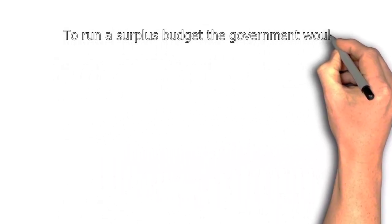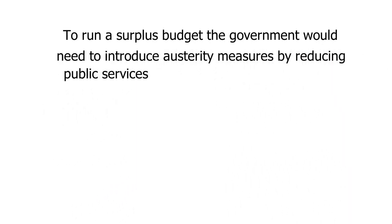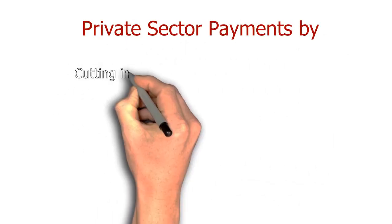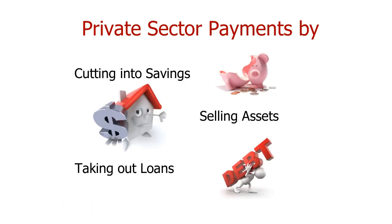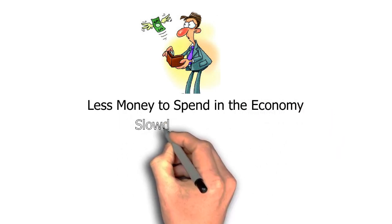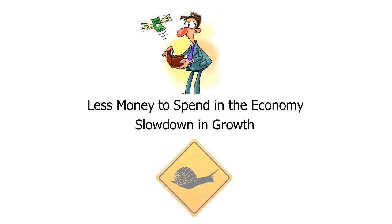So, to run a government surplus, they'd need to introduce austerity measures by reducing public services or taxing the private sector more. To pay for this, the private sector would need to cut into private savings, sell assets or take out loans on credit, thus increasing private sector debt which is already running at extremely high levels in relation to GDP. However, in taking money out of the private sector to reduce government debt, there is less money to spend into the economy, leading to a slowdown in growth, the very opposite of what is required.